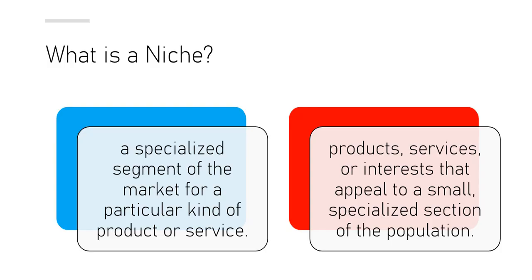What is a niche? I found two definitions that are really applicable. The first: a niche is a specialized segment of the market for a particular kind of product or service. The second: a niche is a product, service, or interest that appeals to a small, specialized section of the population. Both definitions talk about a small, specialized section — a niche helps you identify the population you want to gear your business to and is really a way to categorize your business.